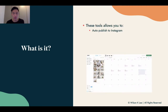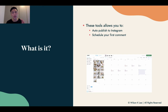What do these tools allow you to do? They allow you to actually publish on Instagram automatically. You can actually schedule your first comment — that means even after your post goes live, you can automatically type in your first comment, whether it's hashtags or something like 'Hey, check out my link in bio.' You can schedule that first comment, which is a very useful tool as you become more savvy. Instagram also allows you to preview your Instagram feed.